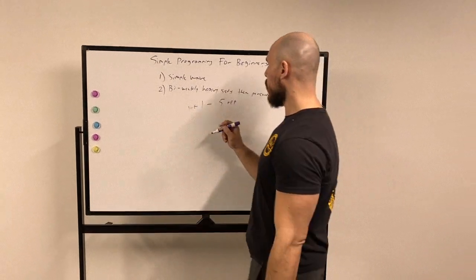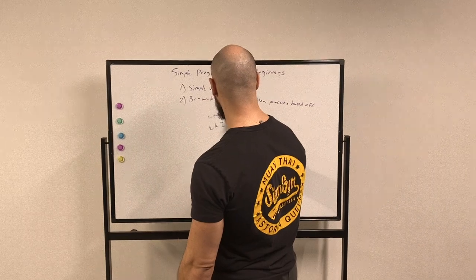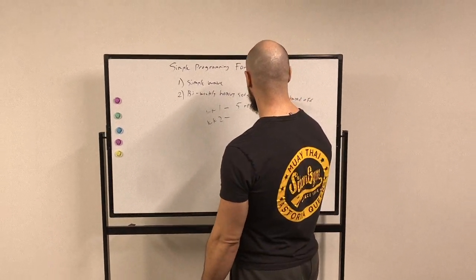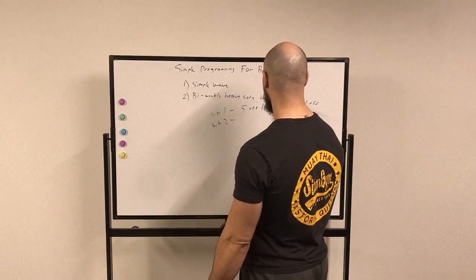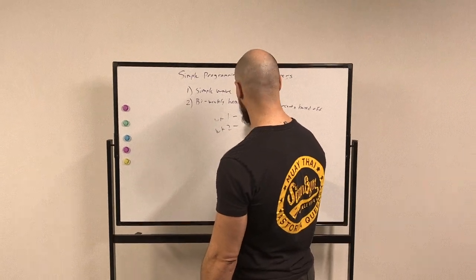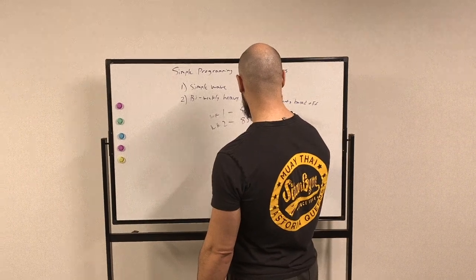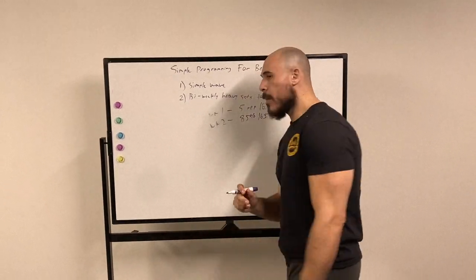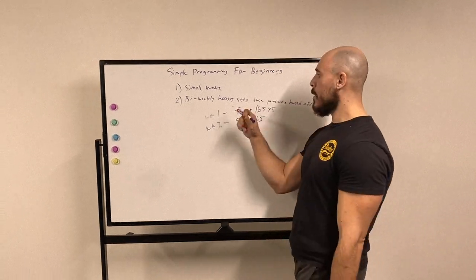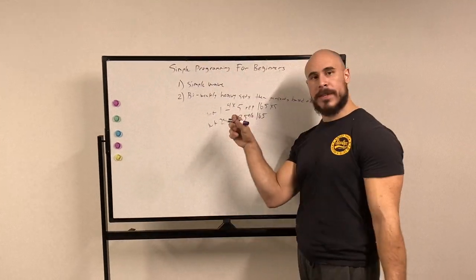Week two, what I would do then is take a percentage of this weight. Say I did 165 pounds for my heavy set of five. Then what I would do is take 85% of 165 pounds and then do volume based off of that.